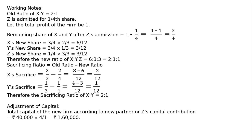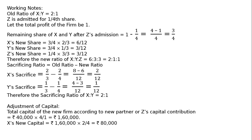That means Z is contributing for one-fourth share Rs 40,000. X's new capital is Rs 1,60,000 multiplied by 2 upon 4, that is equal to Rs 80,000. Y's new capital is Rs 1,60,000 multiplied by 1 by 4, that is equal to Rs 40,000. So the new capitals are: Rs 80,000, Rs 40,000, Rs 40,000, Rs 40,000.